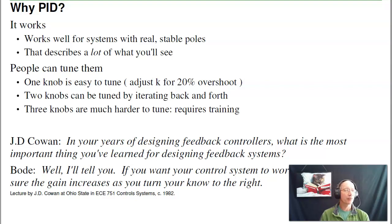One knob is easy to adjust. For example, in VisSim, crank up the gain until you get 20% overshoot. Two knobs can be tuned by going back and forth. Three knobs is a lot harder. You need some training to adjust three knobs. Four knobs, people are helpless.